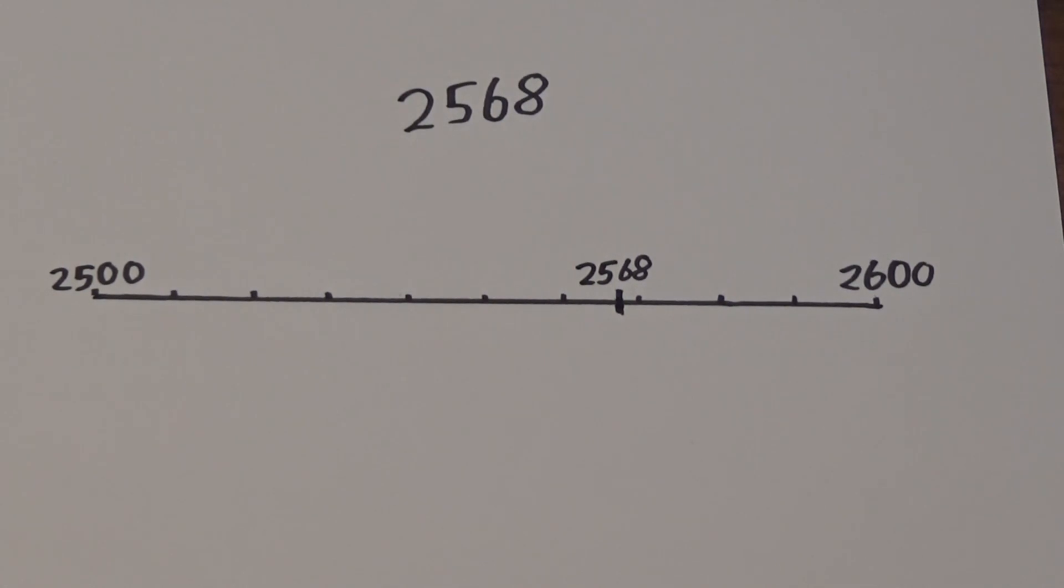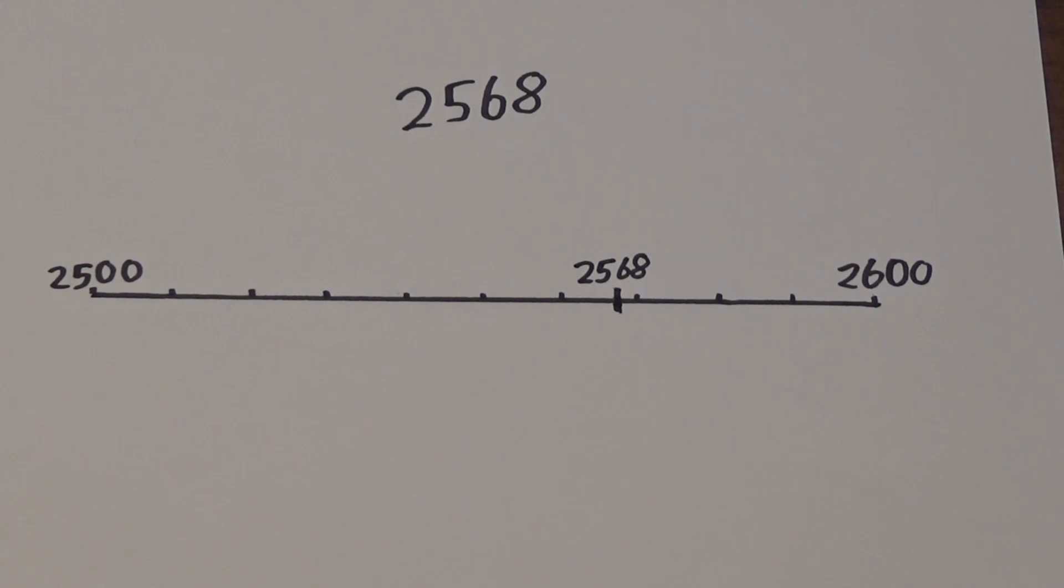I've then written 2,568 by positioning it just before 2,570. I can see that it is closer to 2,600 than it is to 2,500, so I need to round up to 2,600.